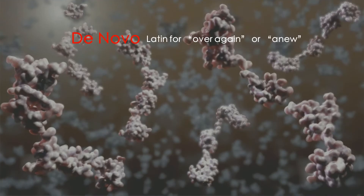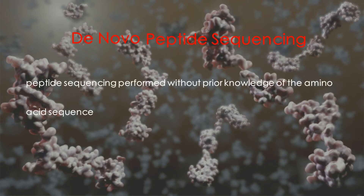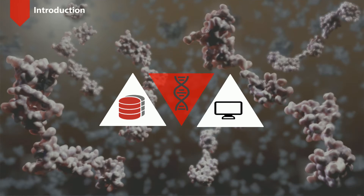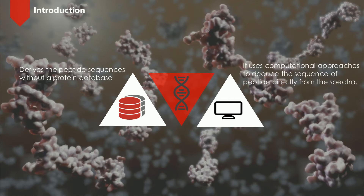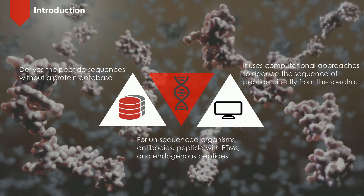De novo is Latin, which means 'over again' or 'anew.' De novo peptide sequencing is a method for peptide sequencing performed without prior knowledge of the amino acid sequence. This method can obtain peptide sequences without a protein database, which overcomes the limitations of database-dependent methods like peptide mass fingerprinting. It uses computational approaches to deduce a sequence of peptide directly from spectra. In addition, it can be used for unsequenced organisms, antibodies, peptides with post-translational modifications, and endogenous peptides.